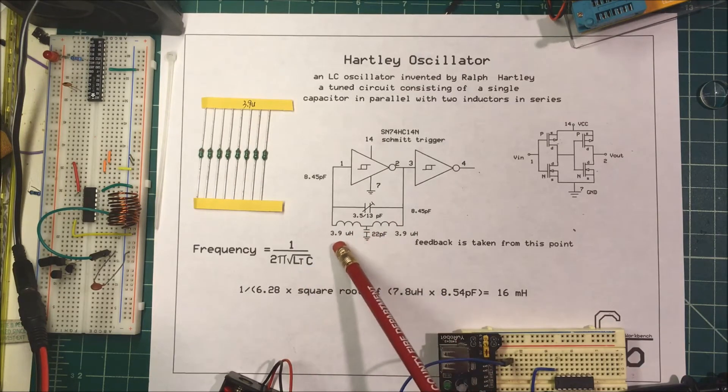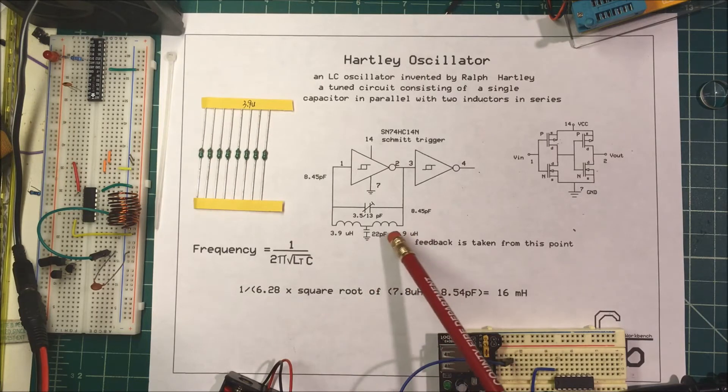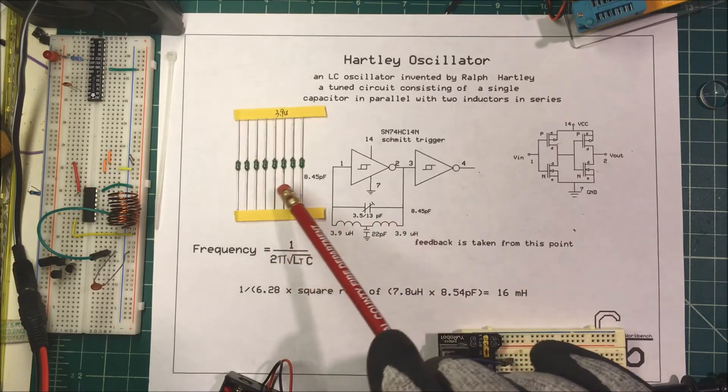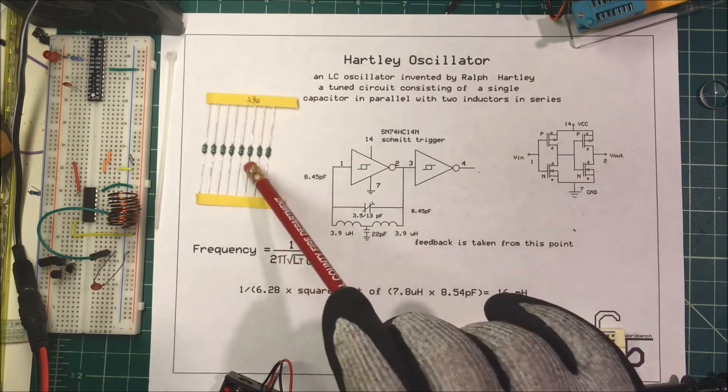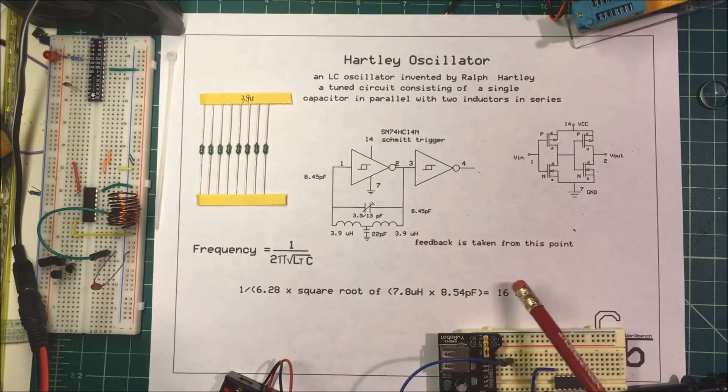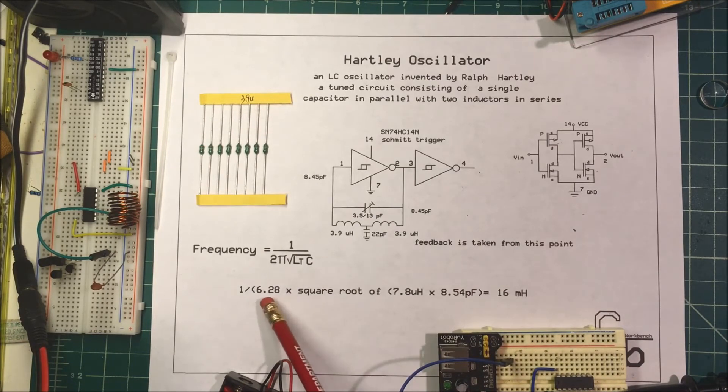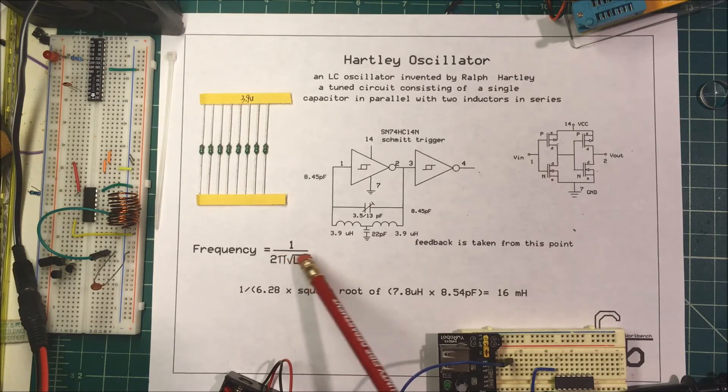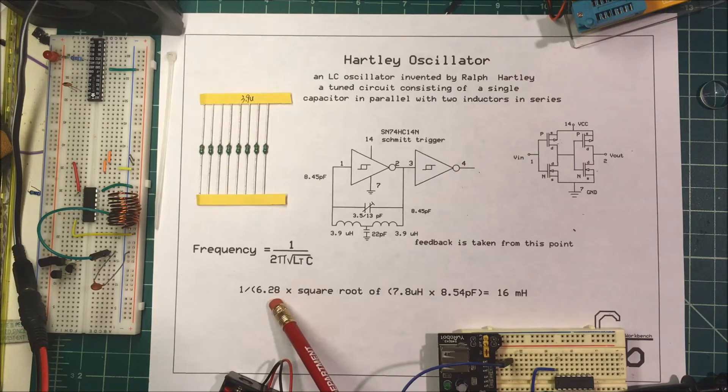Now, I picked these 3.9 microhenry inductors, these right here, because I had them, and we're going to figure out how much capacitance we need to oscillate at 16 megahertz. We could put this into Excel or just onto our calculator, but we'll try it in Google and I'll show you how that works.